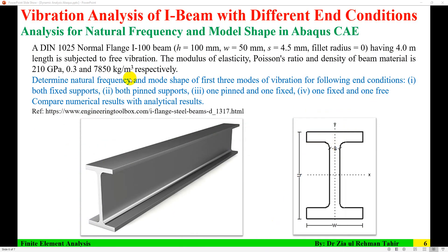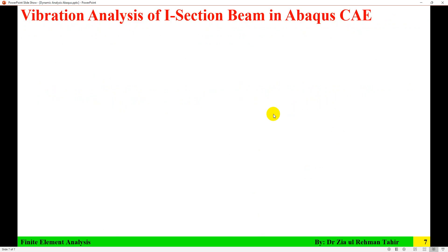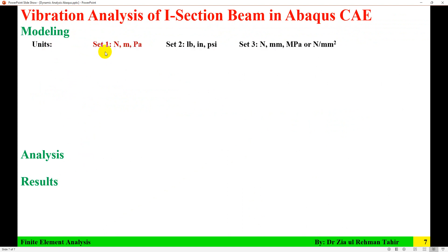This part of the video covers the fixed-fixed beam; the other three end conditions are in another video. The steps of modeling in Abaqus CAE are: modeling, analysis, and results. In modeling, first you need to set the units. I am using Newton and Pascal for this problem, then set the work directory and save the model.